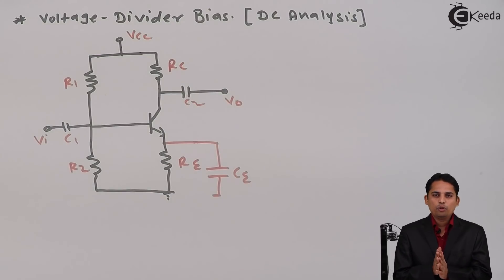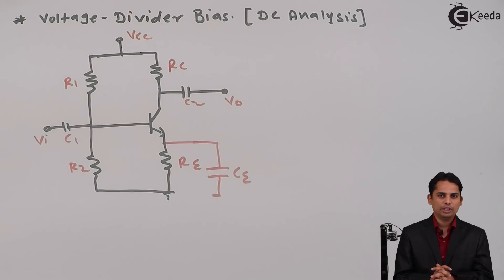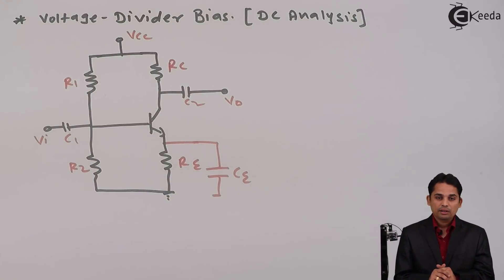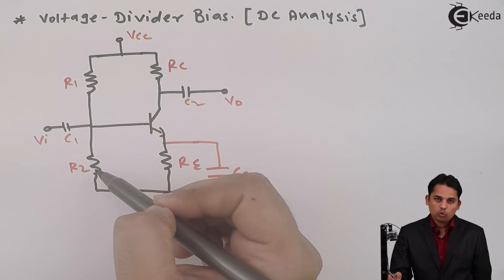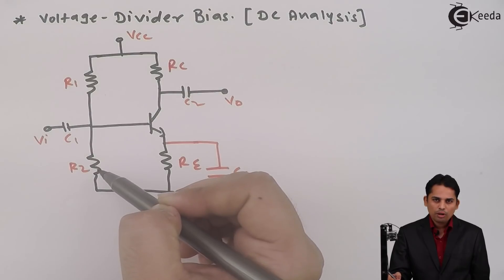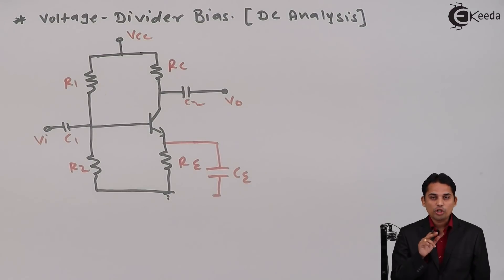Whenever we want to find out Q points, we apply three steps: Step 1 is apply KVL to input, Step 2 is find the value of IC, and Step 3 is apply KVL to the output. However, in this circuit there are two resistors at the base — R1 and R2 — so first we need to reduce them to one equivalent resistor. This is the challenge.